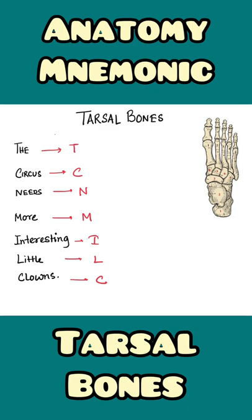The mnemonic is: The Circus Needs More Interesting Clowns. From 'The' we take T, which represents the talus bone. From 'Circus' we take C, which represents the calcaneus bone. From 'Needs' we take N, which represents the navicular bone.